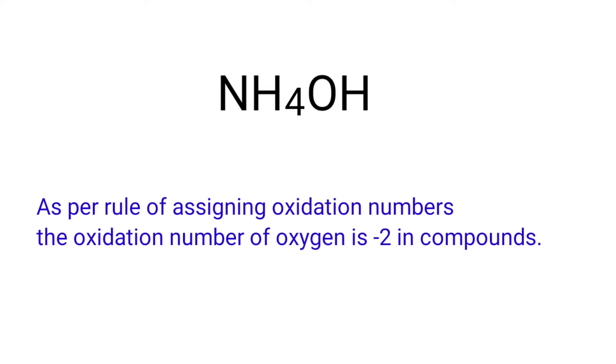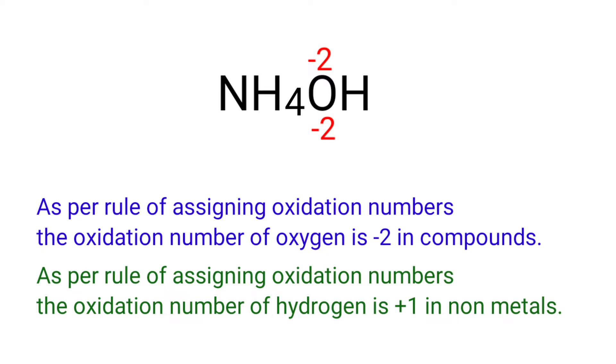As per the rules for assigning oxidation numbers, oxygen has an oxidation number of -2 in compounds. We can write the oxidation number of each element above its symbol and the total contribution below its symbol. As per the rules, hydrogen has an oxidation number of +1 in non-metals.